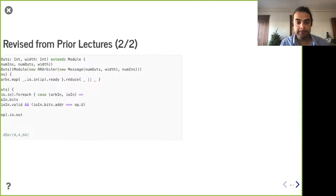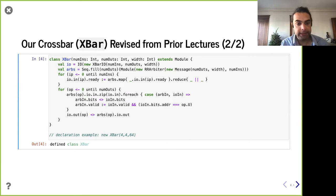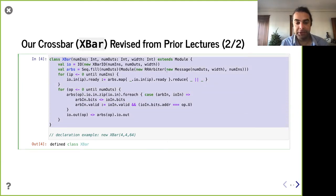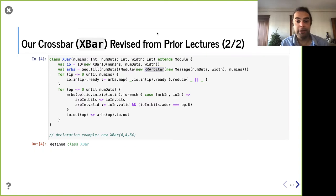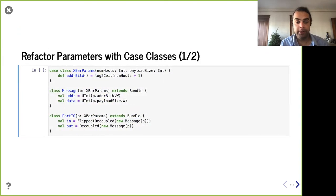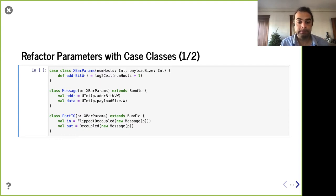At this point it doesn't seem like a very complicated module — we're taking good advantage of existing things to reuse them and using functional programming to simplify. We could also consider using case classes, which we covered earlier. We can put our parameters into a case class — in this case, number of hosts and the payload size — and then redefine our message and ports based on that.